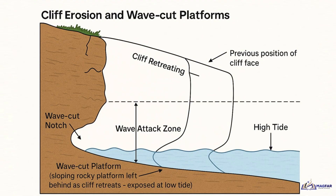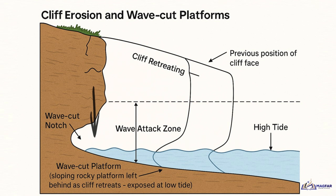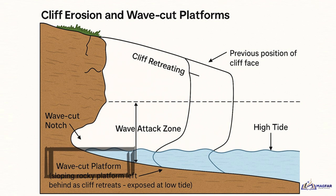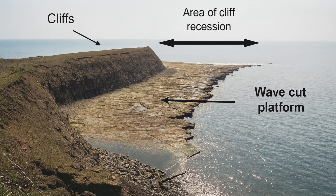Over time, this constant erosion forms a wave-cut notch — a hollow area at the base of the cliff. As this notch gets deeper, the rock above it becomes unstable because there's nothing left to support it. Eventually, gravity takes over and the upper part of the rock collapses. When this happens, the cliff retreats inland. But the waves don't stop there; they start eroding the new base and the whole process continues. This is how cliffs slowly move backward over many years. When the collapsed rock is cleared, it often leaves behind a wave-cut platform — a flat, rocky surface at the base of the cliff, usually visible during low tide. It shows you just how far the cliff has retreated over time.